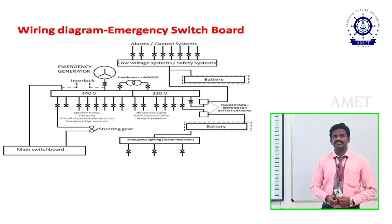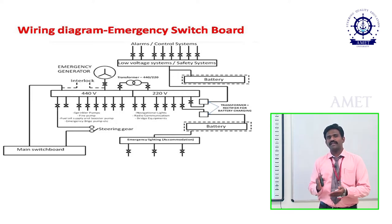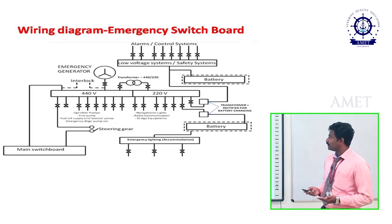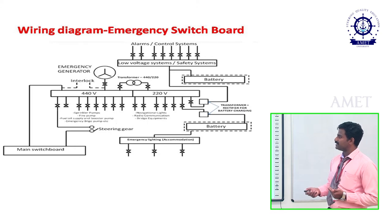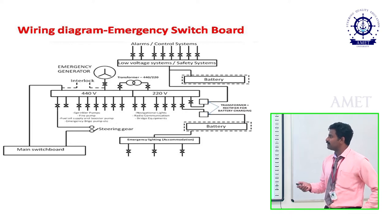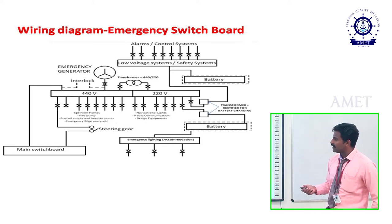This is the wiring diagram of the emergency switchboard. The emergency switchboard is split into two voltage sections: 440V and 220V. The main switchboard supply is connected to the 440V section. There is a switch connected between the main switchboard and the emergency switchboard, and the emergency generator connects to the emergency switchboard.